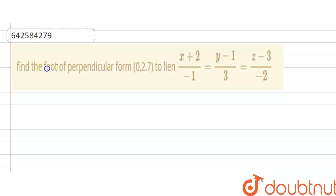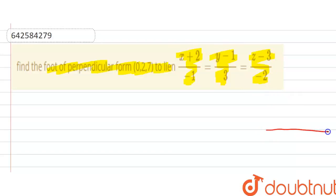Hello guys, the question is: find the foot of perpendicular from point (0, 2, 7) to a line x plus 2 divided by minus 1, y minus 1 divided by 3, z minus 3 divided by minus 2. This is the line, and the perpendicular from point P — that is (0, 2, 7) — to point Q, which we have to find.